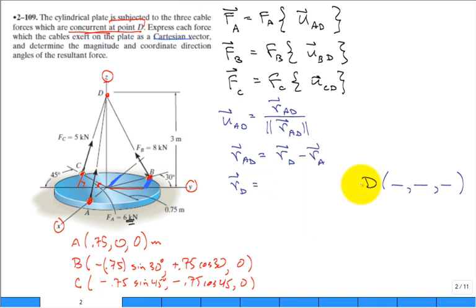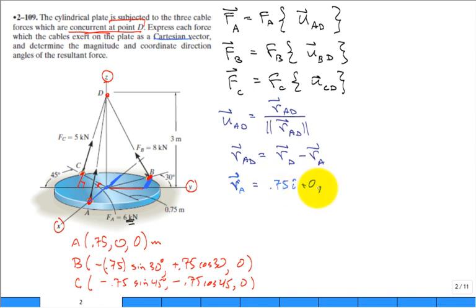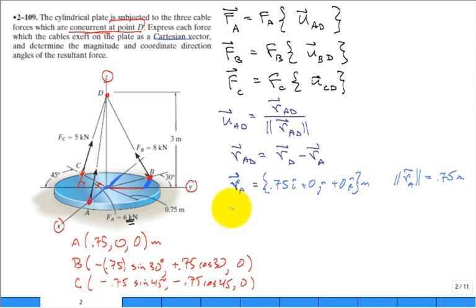You must get those point locations right, otherwise the whole solution fails. Now we convert the point locations into position vectors. The position vector for point A is 0.75i + 0j + 0k meters. Point D is at x = 0, y = 0, and z = 3 meters.